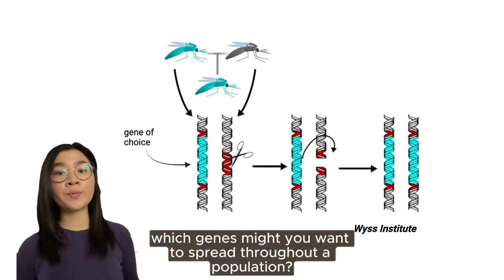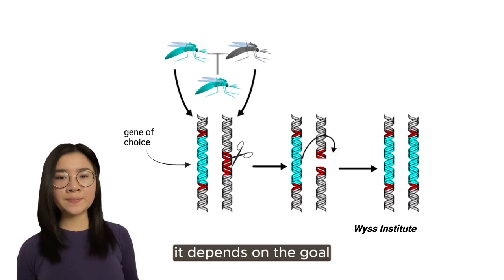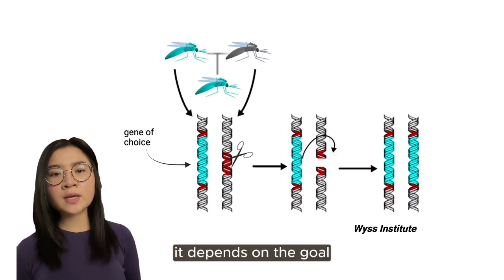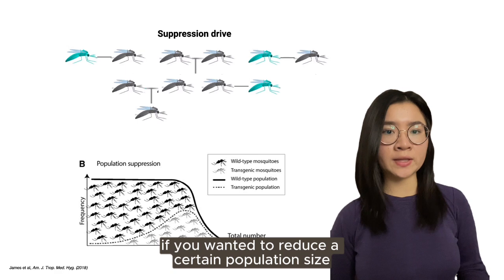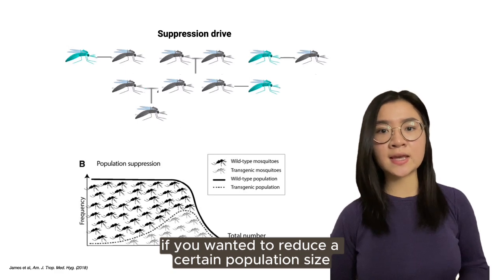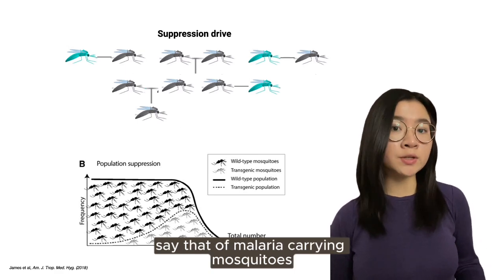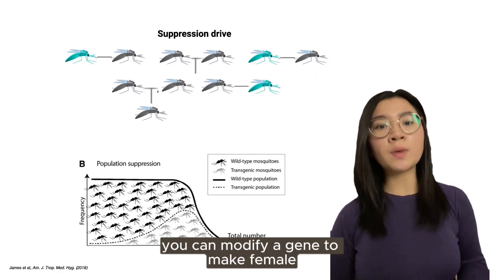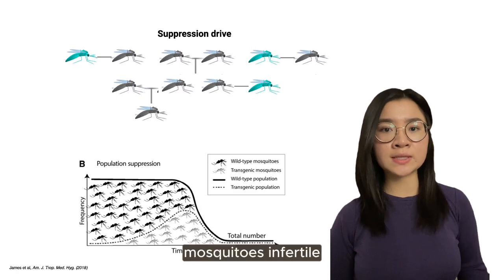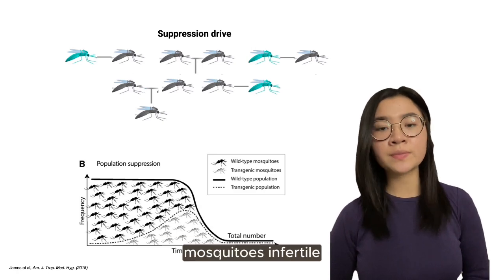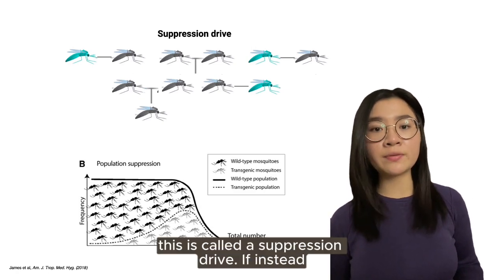Which genes might you want to spread throughout a population? It depends on the goal. If you wanted to reduce a certain population size, say that of malaria-carrying mosquitoes, you can modify a gene to make female mosquitoes infertile. This is called the suppression drive.